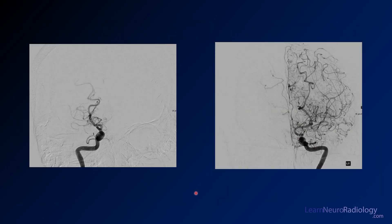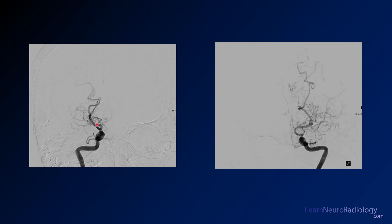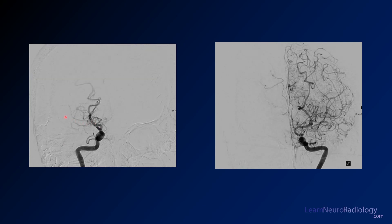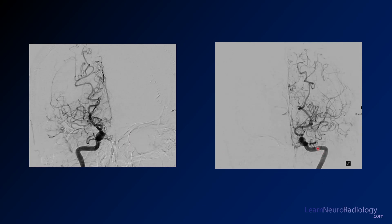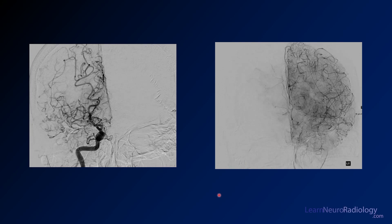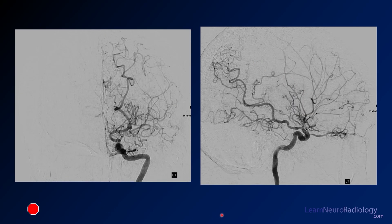On angiography, looking at the right ICA injection, you see only a few MCA branches but mostly collaterals — nothing that resembles a normal MCA. On the left side, similarly, just a few branches and a lot of abnormal collaterals in the left Sylvian fissure. The appearance is similar bilaterally. You should have MCA branches out in the Sylvian fissure, but there's a gap — you're missing a bunch of the MCA branches.